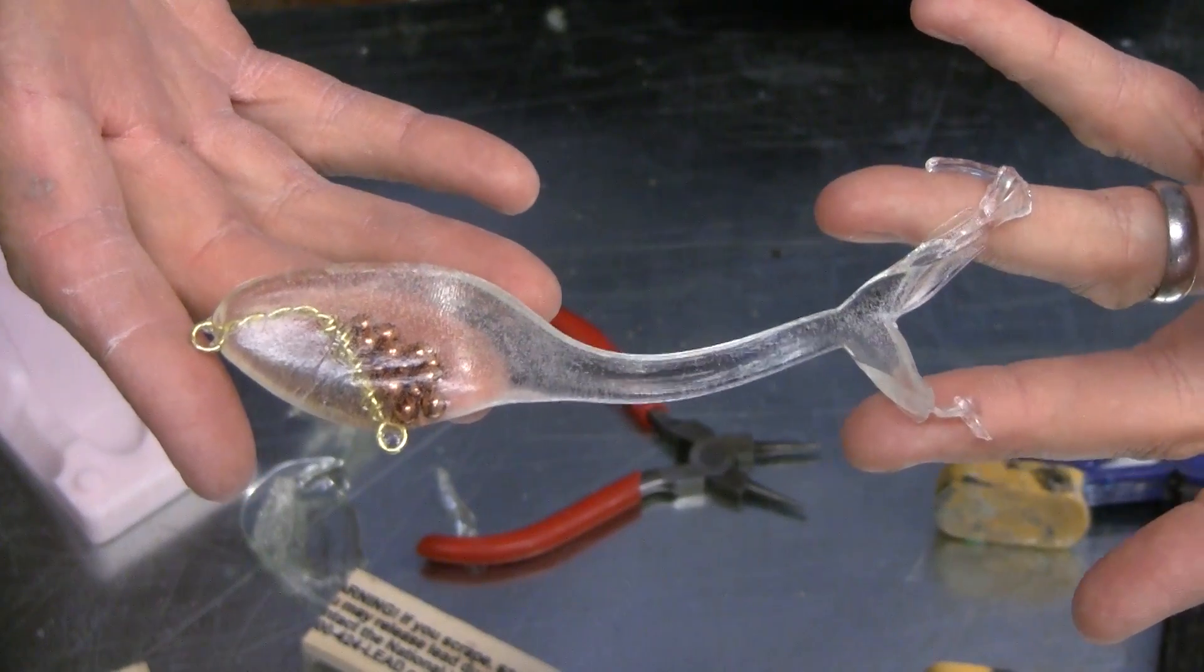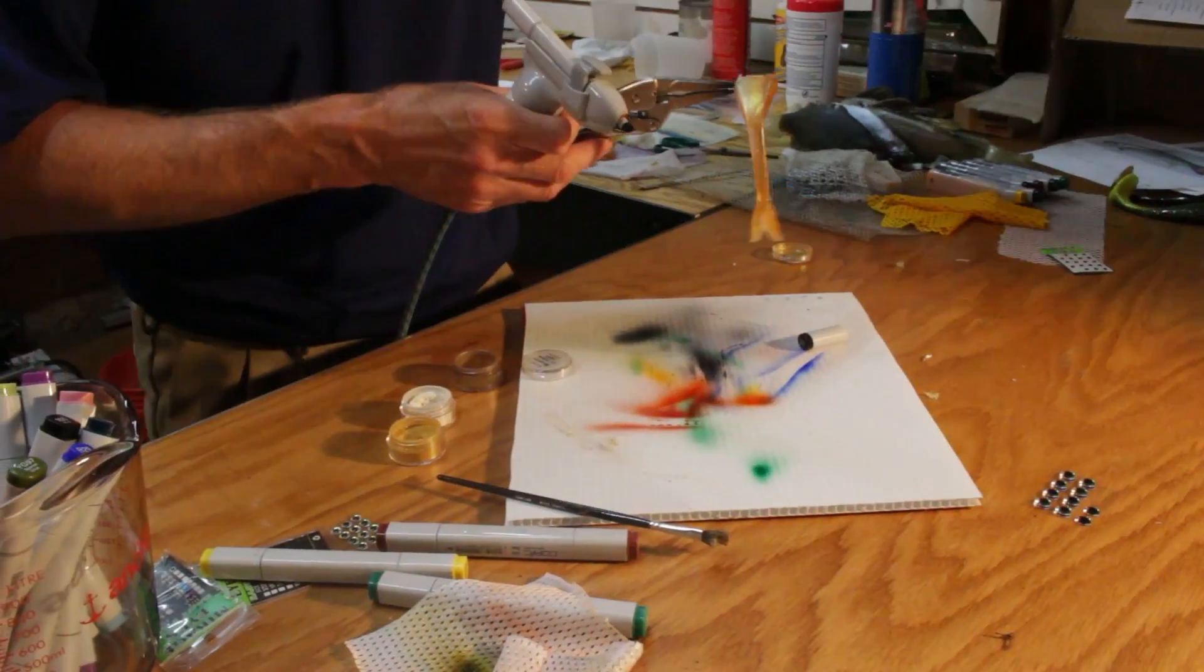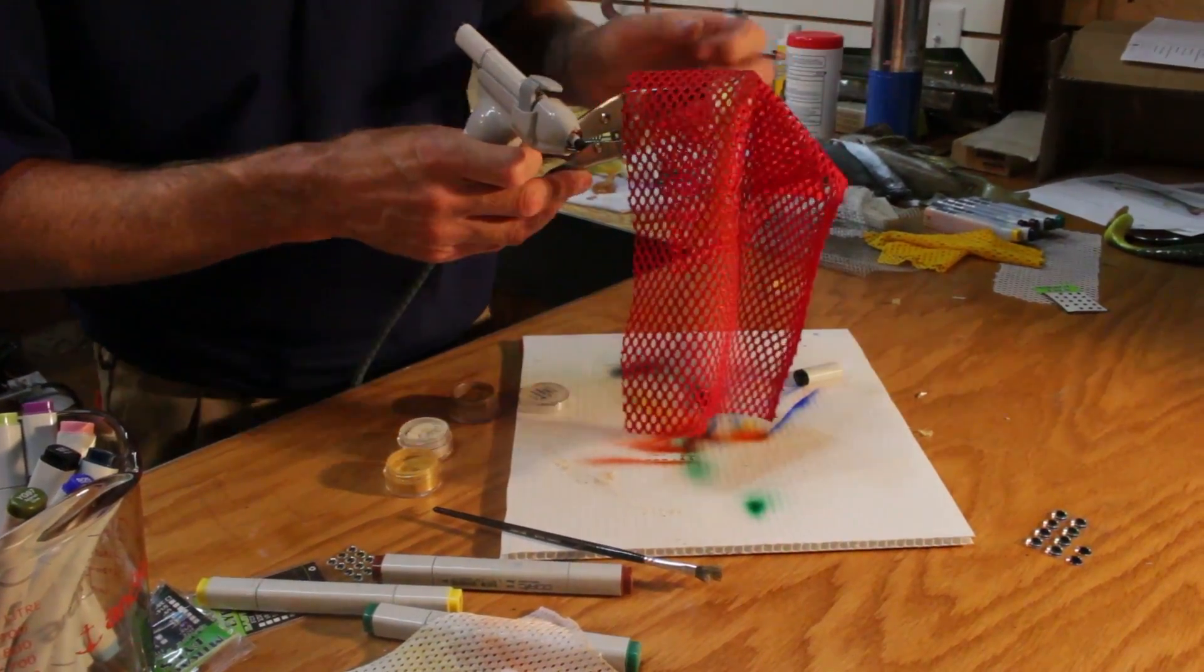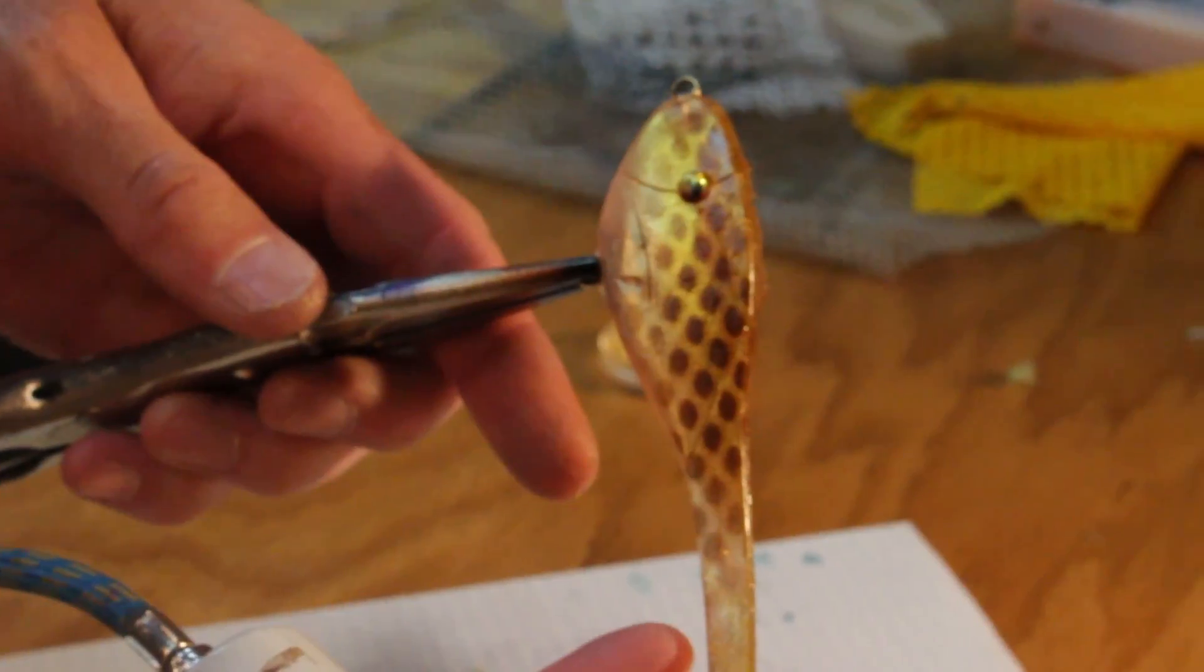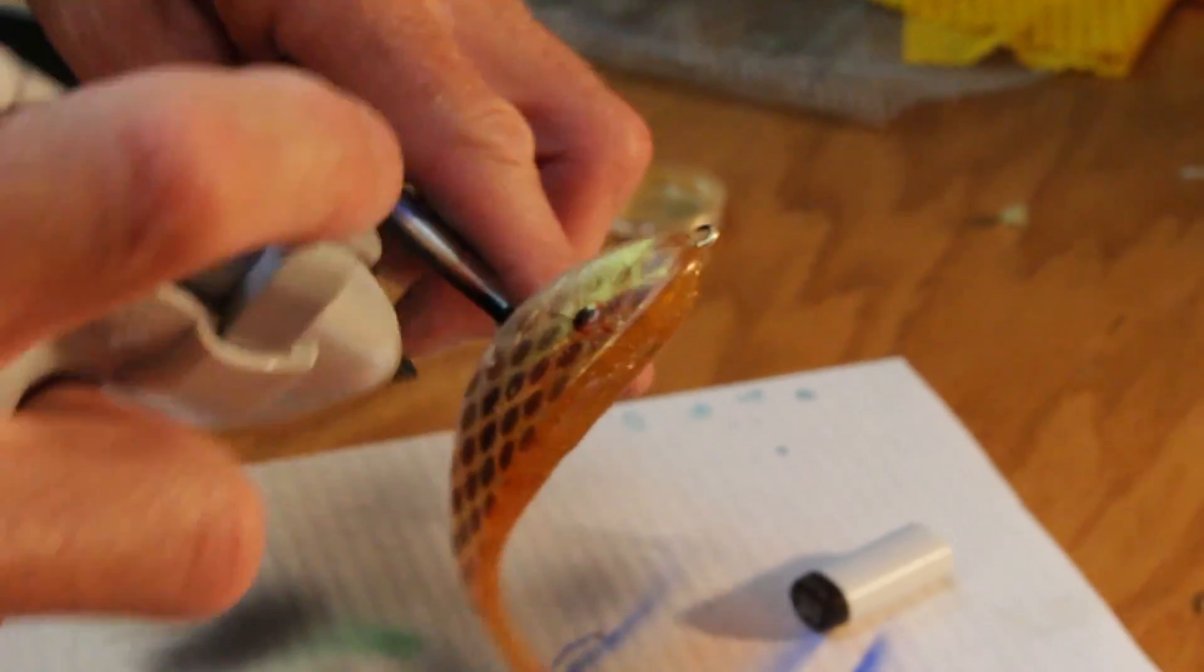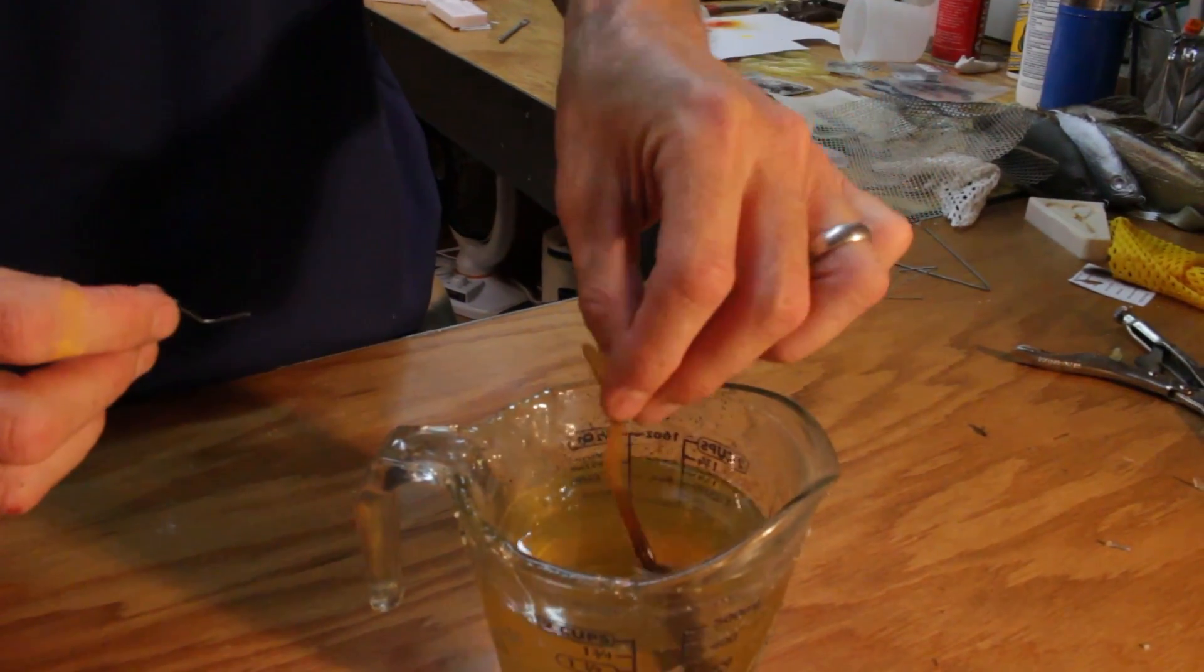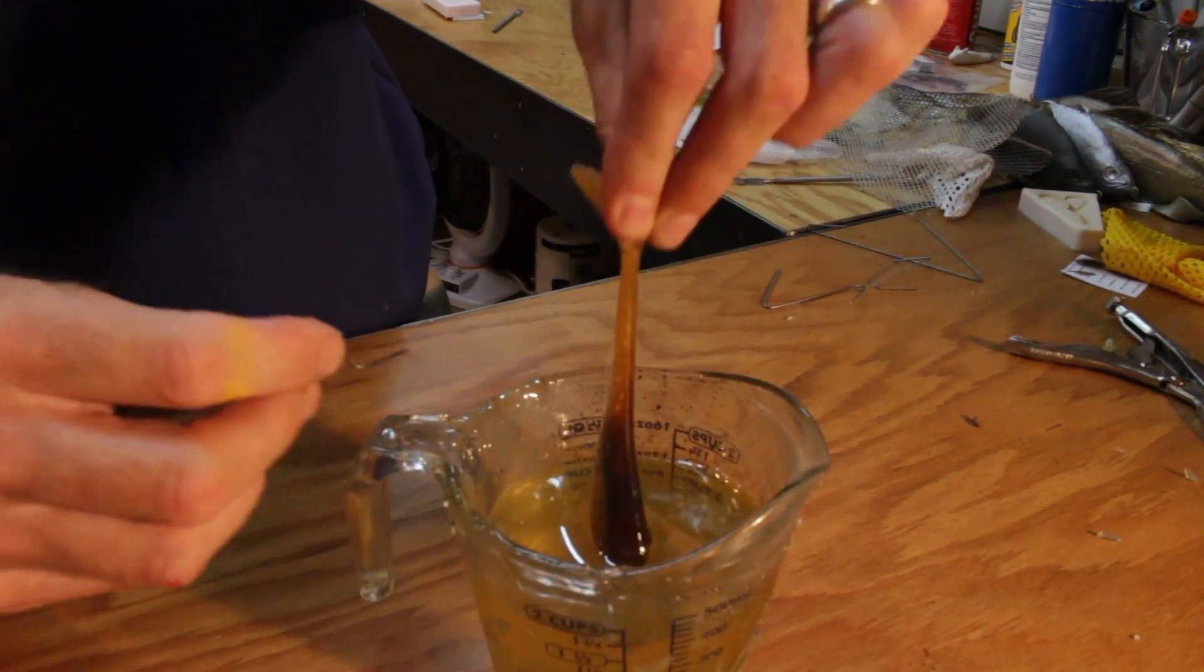Now we're ready to decorate them. Here we've used some alumidust for the belly, as well as the Copic airbrush system that we paint onto the outside of the lure, and then dip in soft plastic to put a protective coating and lock the colors in.